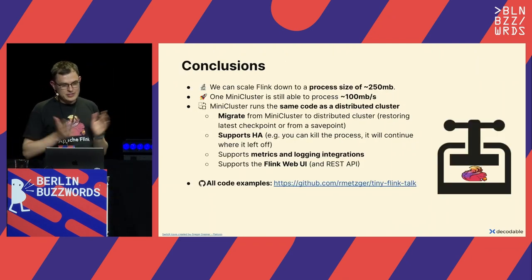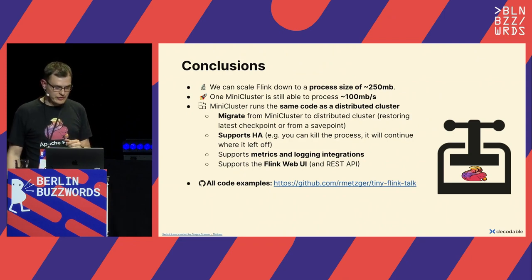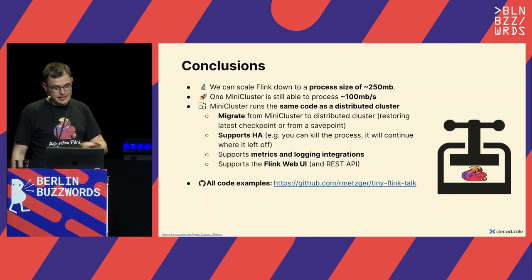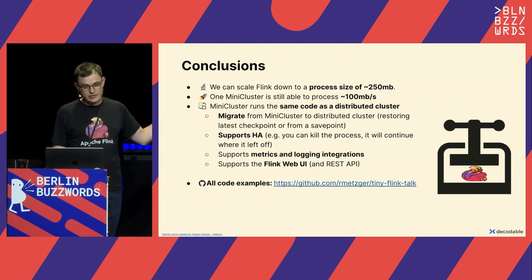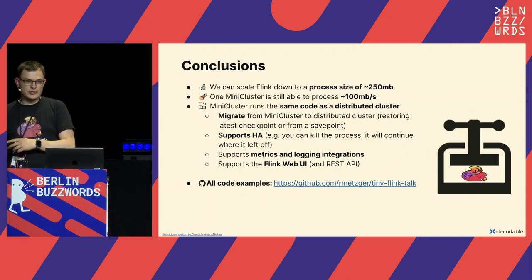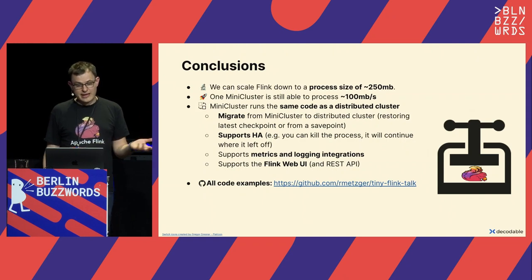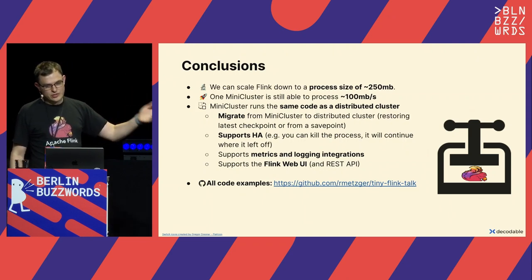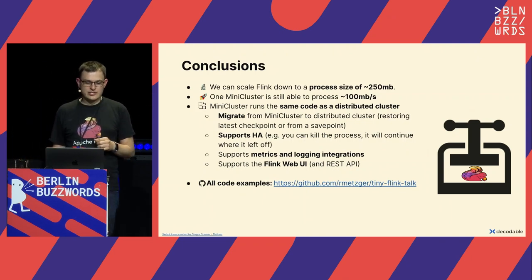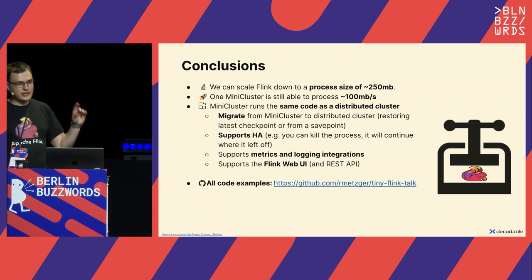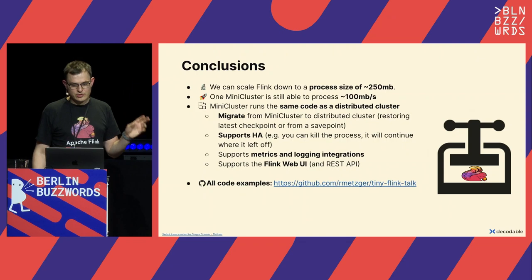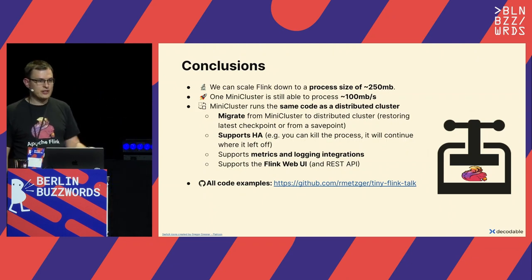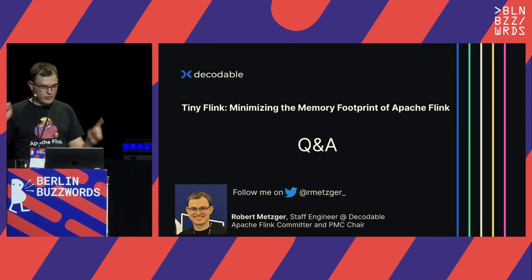To conclude: I was able to scale Flink down to a process size of roughly 250 megabytes, still able to process 100 megabytes of data per second. These mini clusters run the same code as a fully distributed cluster, so you can migrate your jobs and state from mini cluster to a fully distributed cluster as workload grows. It supports high availability — kill the process, and on restart it reads from a ConfigMap or ZooKeeper to restore from the latest checkpoint. It supports all Flink metrics, logging integrations, and the Flink web UI on port 8081. I have a GitHub repository with all examples from this talk.